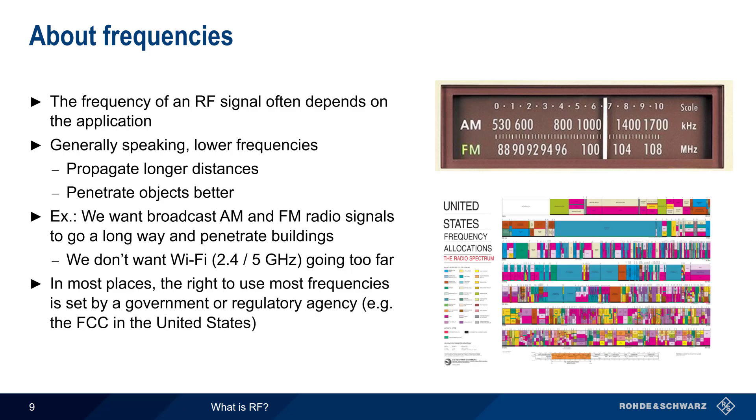In most parts of the world, the right to use a given frequency or range of frequencies is set by a government or regulatory agency. In the United States, this is the Federal Communications Commission or FCC. Acquiring the license to use certain frequencies often requires a fee, and the cost can be quite substantial. Cellular network operators, for example, pay billions of dollars for the exclusive right to use certain frequencies.